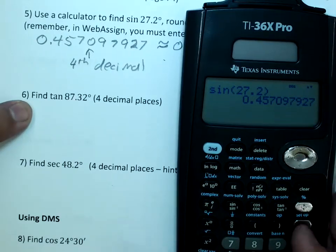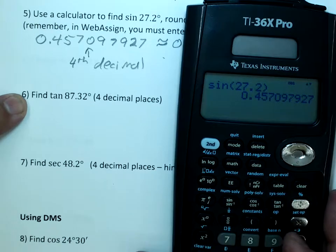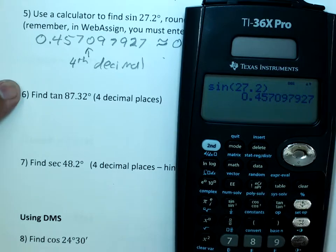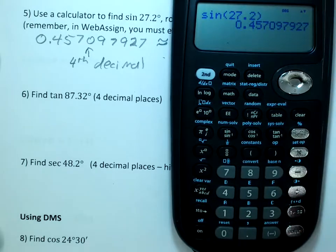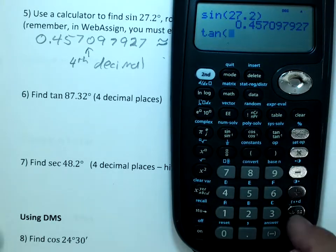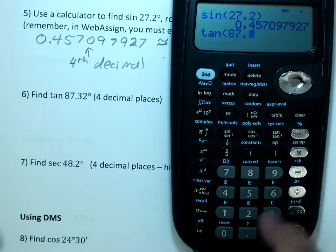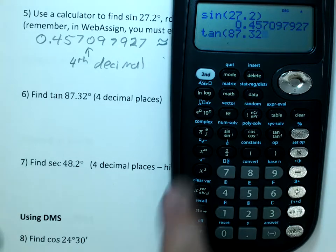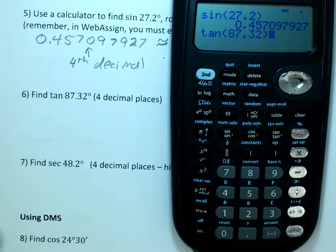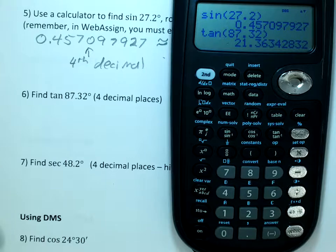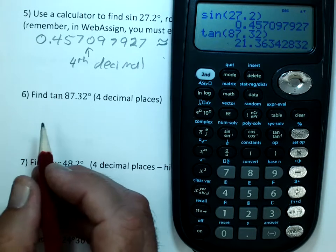Let's find the next one: tangent of 87.32. Go to your tangent button and find the tangent of that degree — 87.32. Since we're using decimals, we don't really have to enter the degree symbol; it's just going to assume it's in degrees. And that's 21.3634.